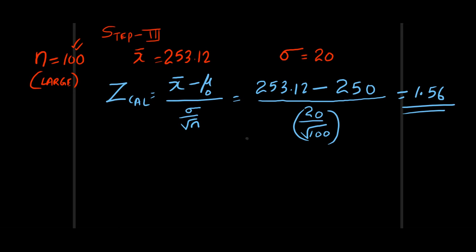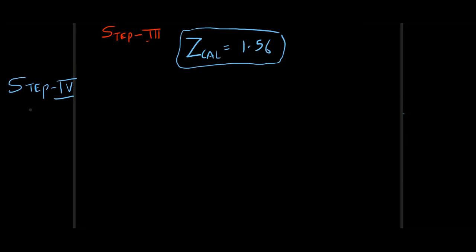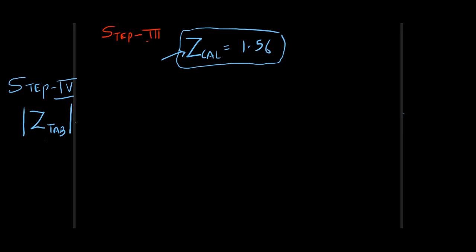Step number 4: z tabulated. Whatever you calculate, you tabulate the same distribution. We take the modulus because we're not interested in whether the answer is negative or positive. For z distribution, the format is |z_α|. For t distribution it's t(α, df) where df = n − 1. So z_α = z(0.02).